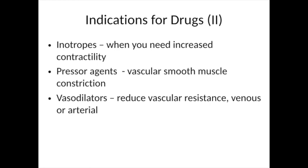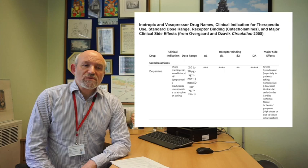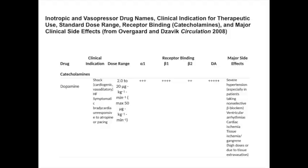There can finally be a need to increase blood pressure or peripheral perfusion when administered fluids have not achieved the desired effect. Inotropic drugs are needed when you need to increase contractility, and vasopressor drugs are the drugs of choice when vascular smooth muscle constriction is the missing factor to maintaining perfusion. Vasodilator drugs will allow a reduction in vascular resistance, be it venous or arterial, to allow the heart to function more effectively. We will now go through a series of specific inotropic drugs considering their individual effects.